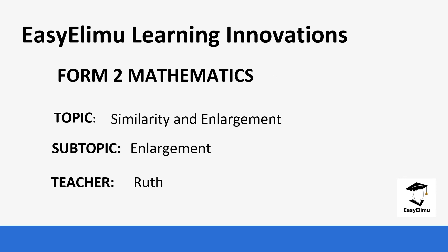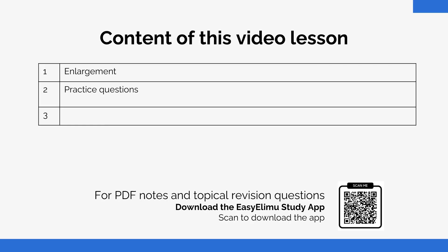Today we are going to be looking at enlargement. In the previous lesson we looked at similar objects in the case of triangles. We saw similar triangles and we said that the ratio of their sides gives a constant ratio and also the angles are the same.